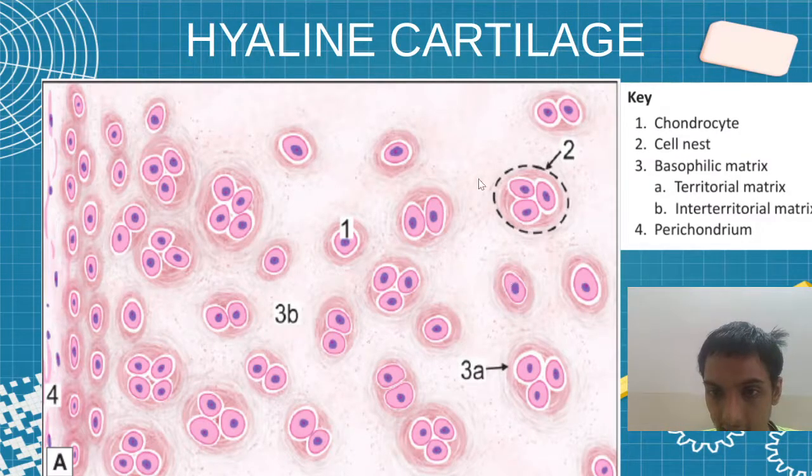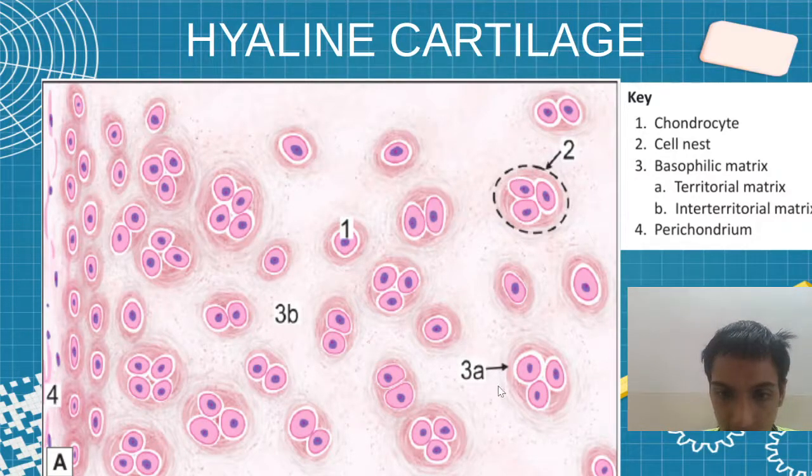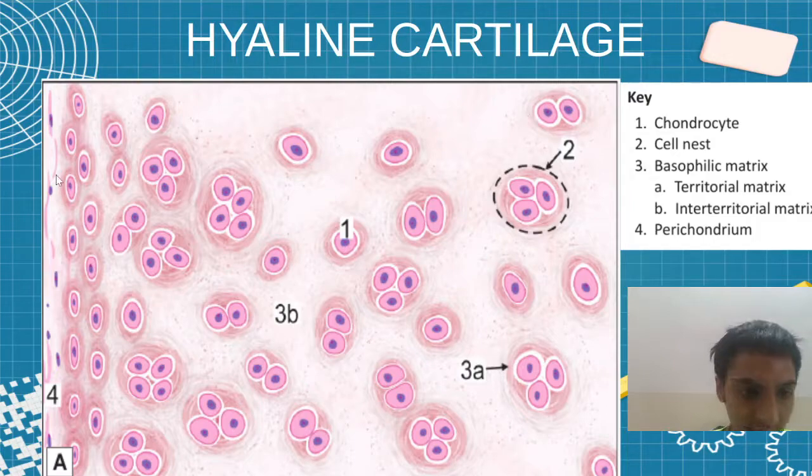This dotted region is the cell nest. This is the basophilic matrix. These are the territorial and inter-territorial matrix. And here you can see the perichondrium layer.